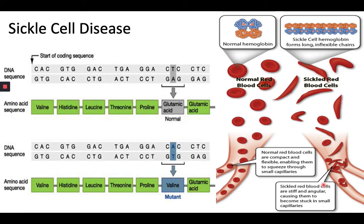How can biochemistry impact on health and disease? Let's look at a classical example: sickle cell disease. Sickle cell disease is a group of disorders that affects hemoglobin, the molecule in red blood cells that delivers oxygen to cells throughout the body. People with this disease have atypical hemoglobin molecules called hemoglobin S, which can distort red blood cells into a sickle or crescent shape. When red blood cells sickle, they break down prematurely, which can lead to anemia. Additionally, sickled red blood cells, which are stiff and inflexible, can get stuck in small blood vessels, depriving highly vascularized tissues and organs such as the lungs, kidneys, spleen, and brain of oxygen-rich blood, and can lead to organ necrosis and damage.